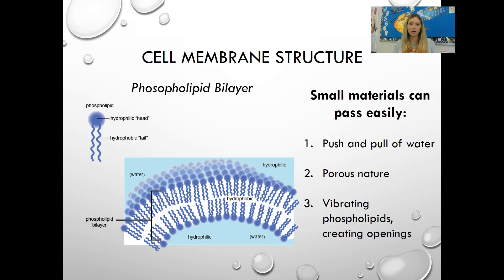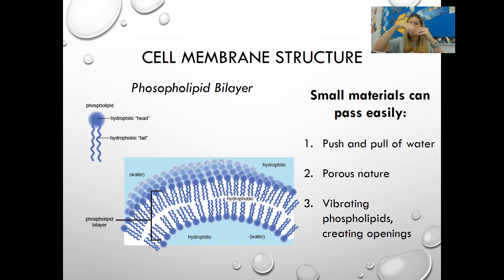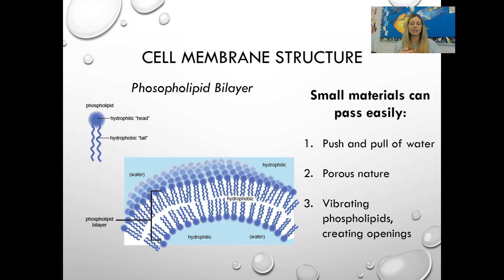Half of the cell membrane is constantly attracting water and the other half is constantly repelling water, creating a constant push and pull of water, which is one of the reasons the cell membrane is really good at letting things in and out. Small things can pass through the cell membrane easily for three reasons: that constant push and pull of water, the porous nature of the phospholipid arrangement, and the constant vibration of phospholipids creating natural openings.